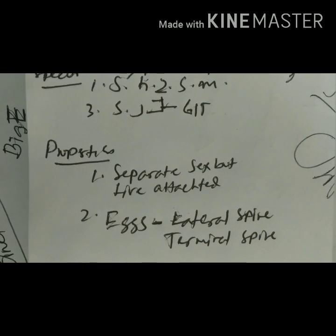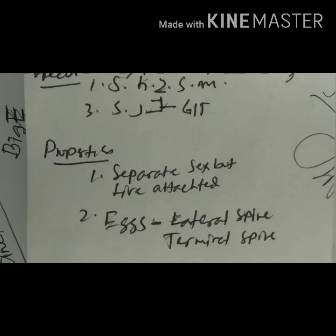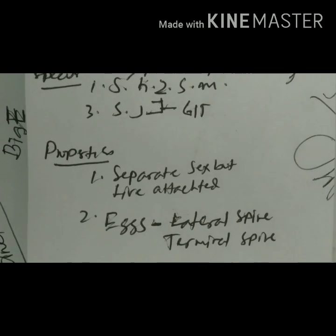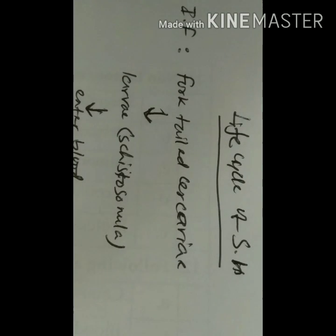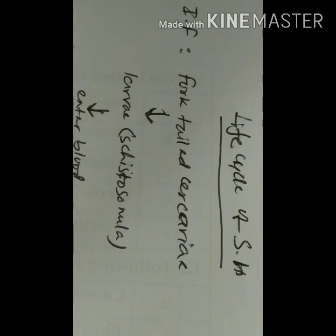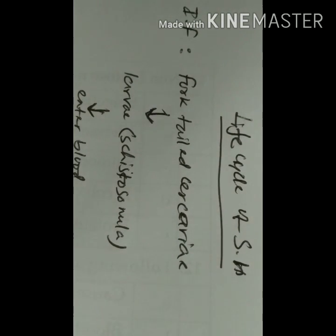Schistosoma mansoni and Schistosoma japonicum adults live in the mesenteric vein, whereas Schistosoma haematobium lives in the veins draining the urinary bladder. In the life cycle of Schistosoma haematobium, the definitive host is vertebrates or humans, and the intermediate host is the freshwater snail.